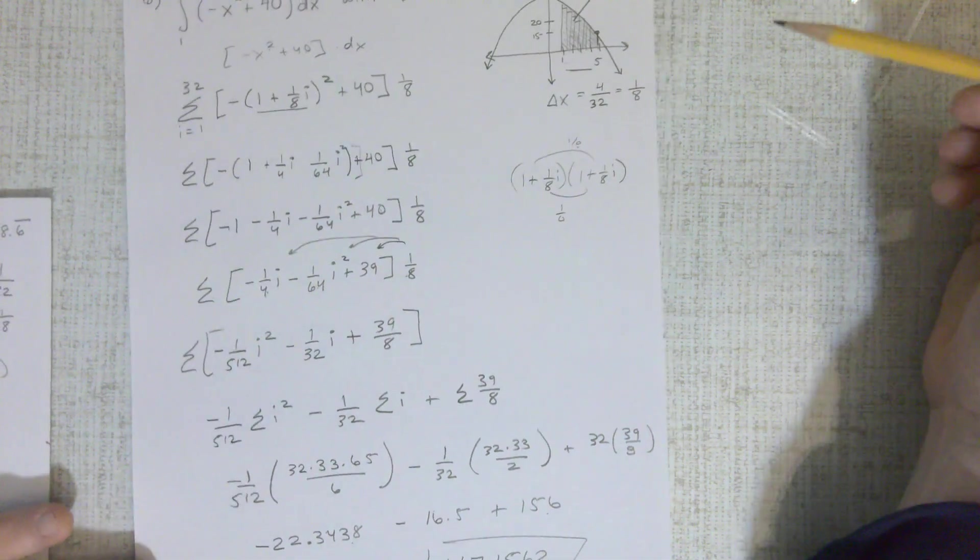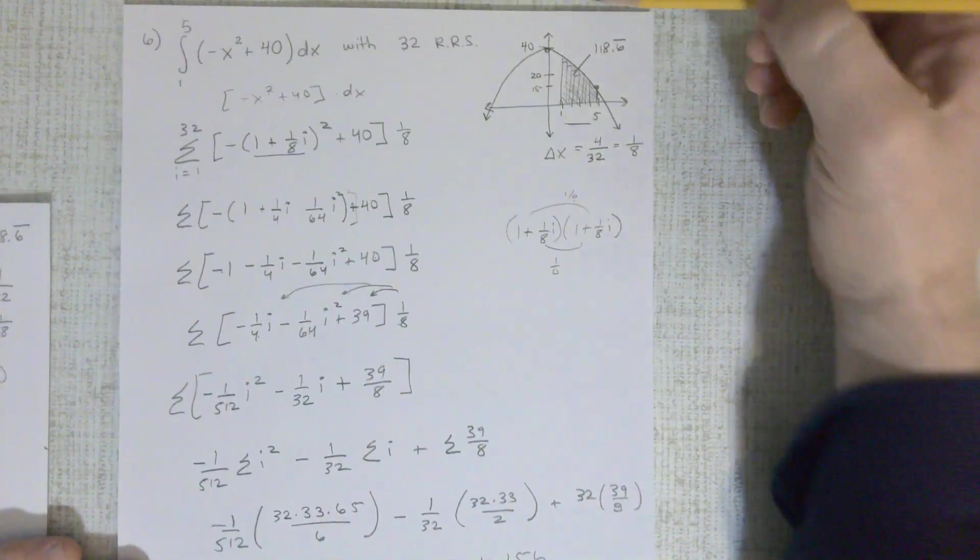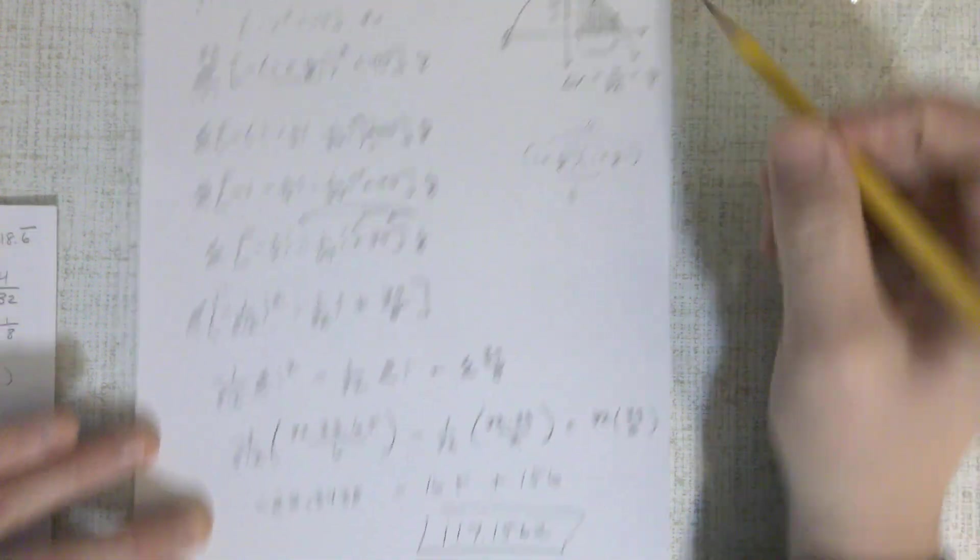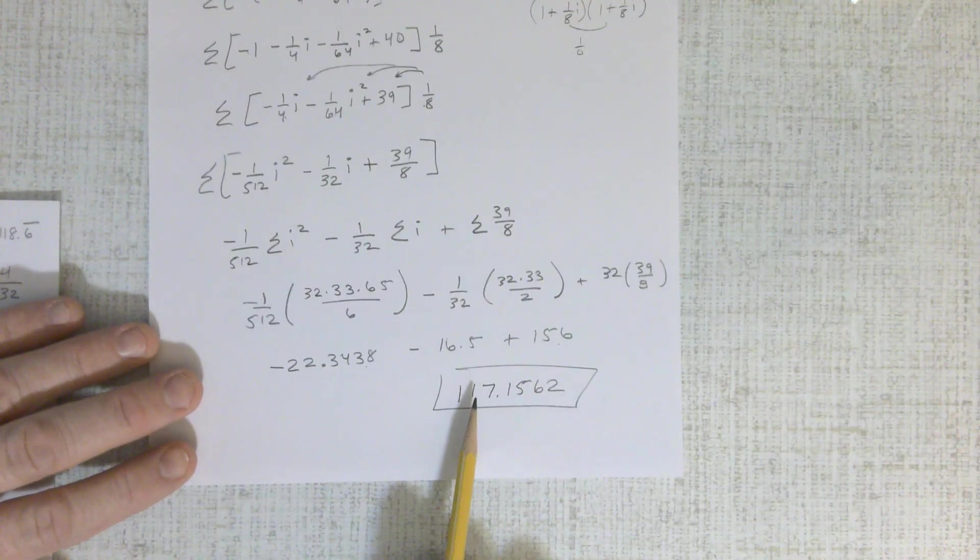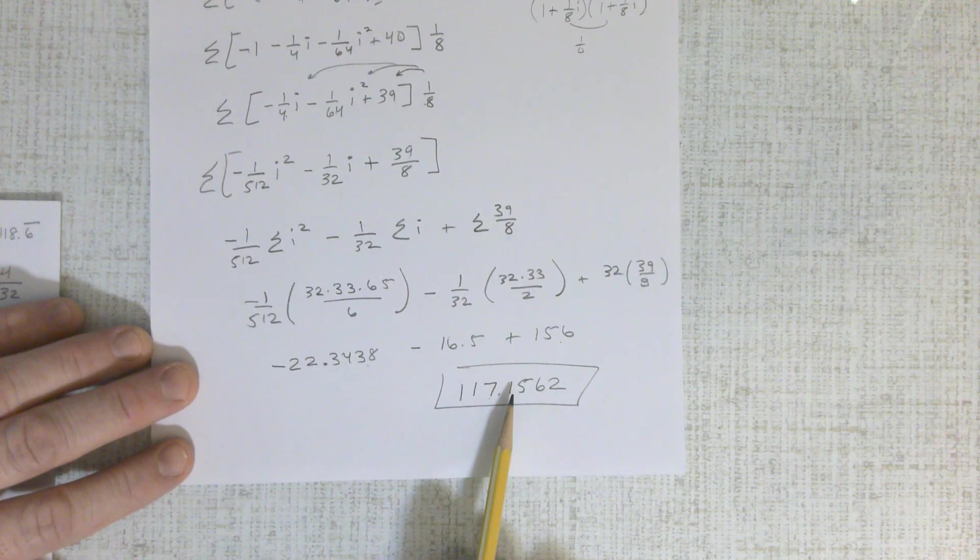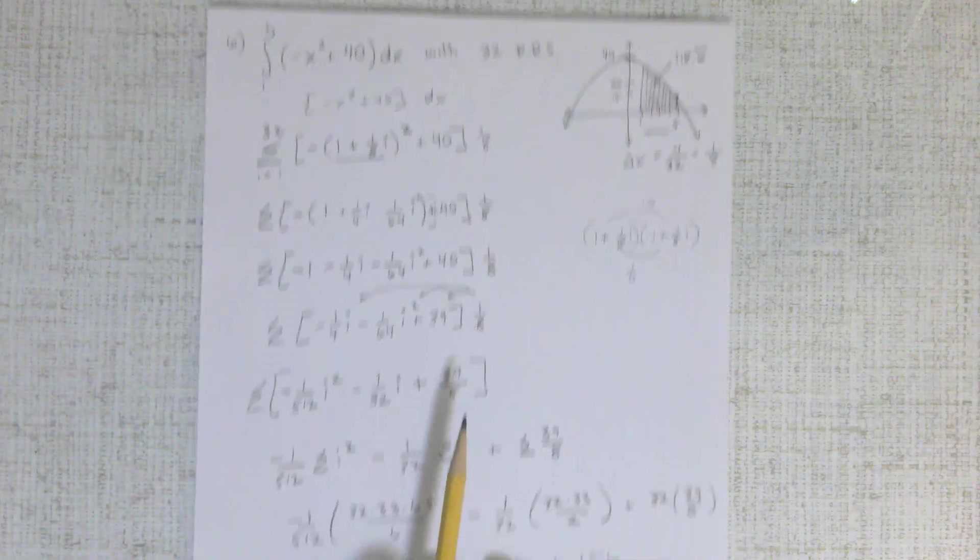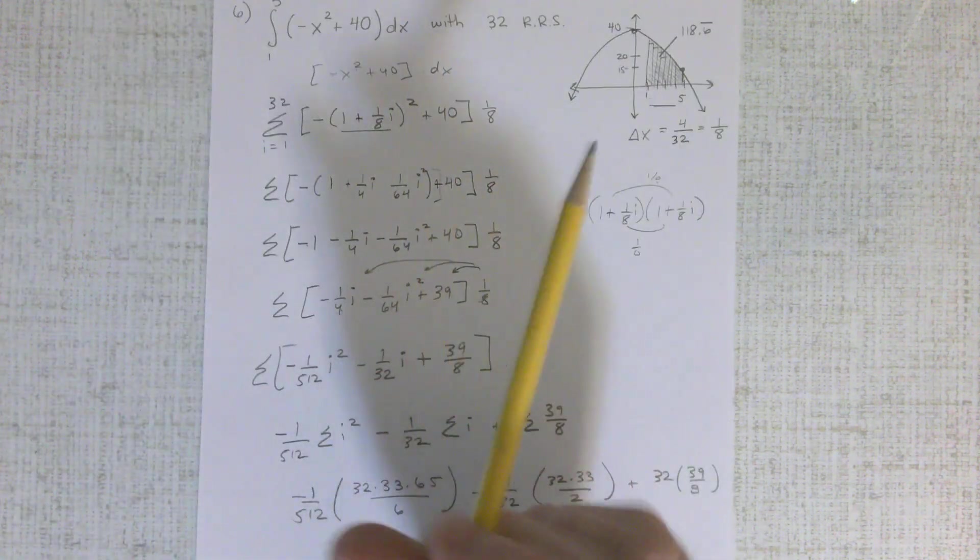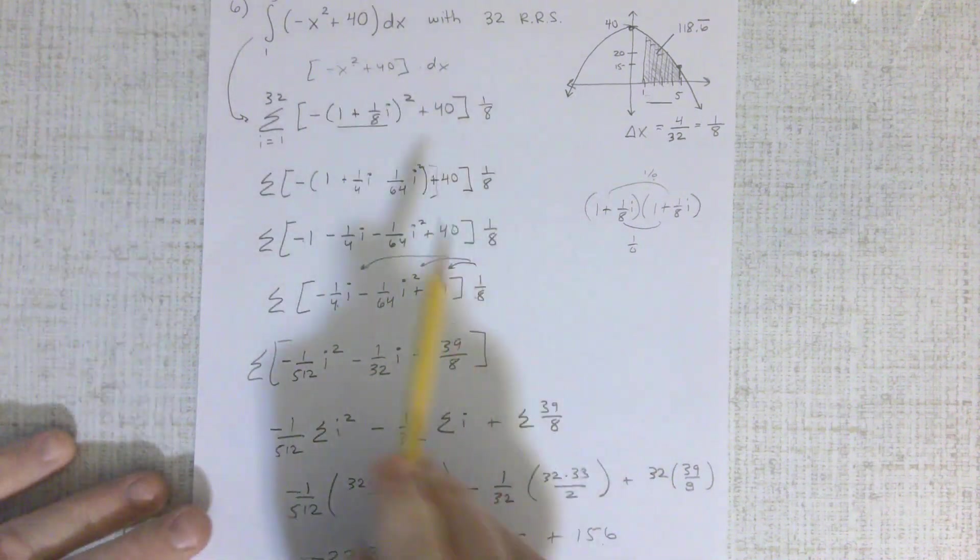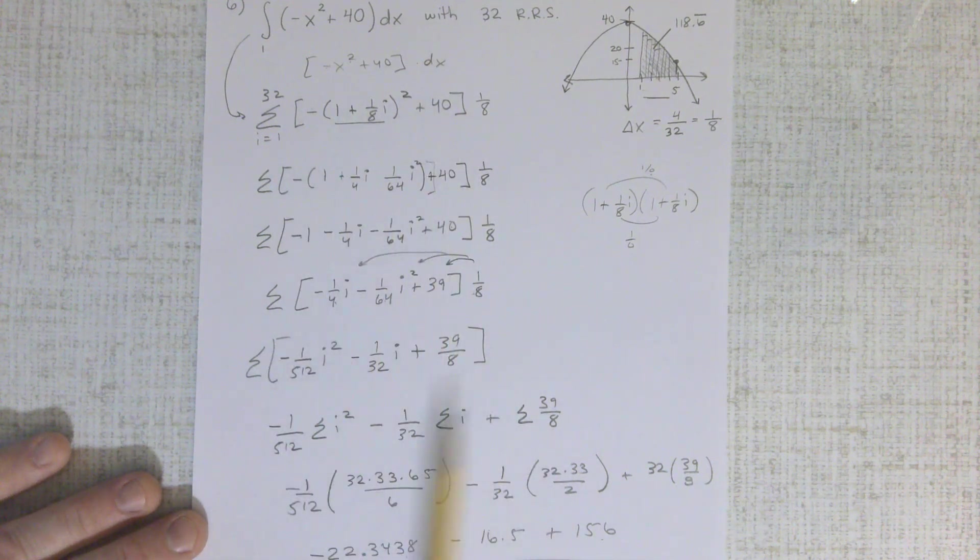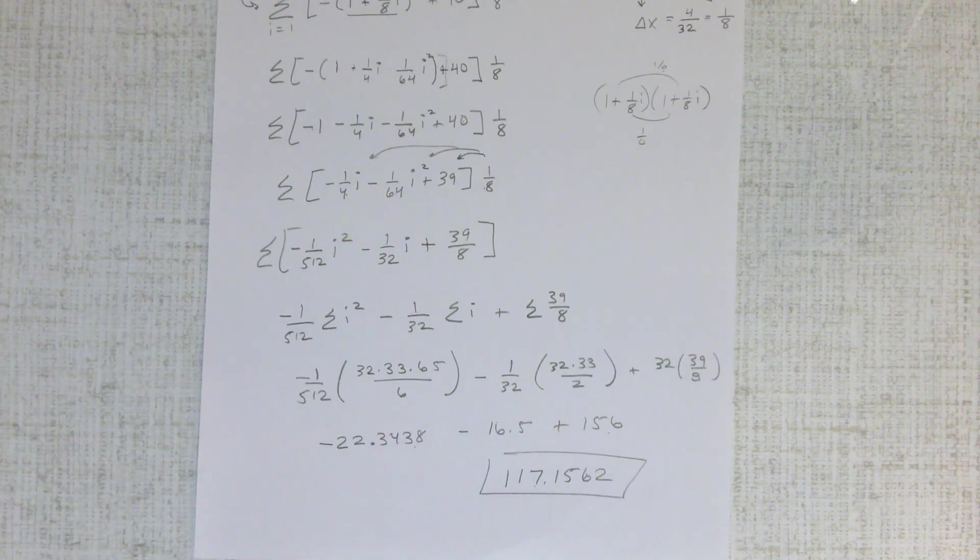And just like we said, the exact area up here is 118. If we use 32 rectangles in there, we have those little tiny missing pieces, which means the area we come up with is 117.1562. All right. Again, the plan is rewrite it as a Riemann sum. After you rewrite it, this one has a lot of simplification. This is probably as much as we do, but it has all of this simplification to get down to counting up those rectangles. 117.1562 for the area.